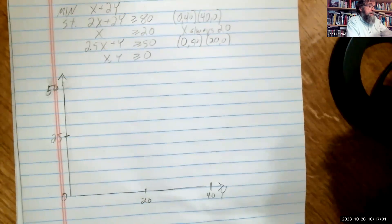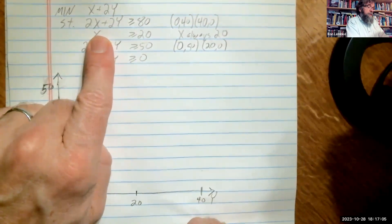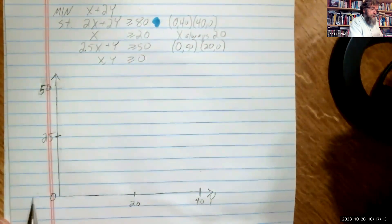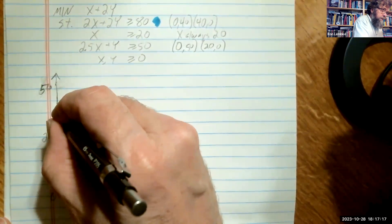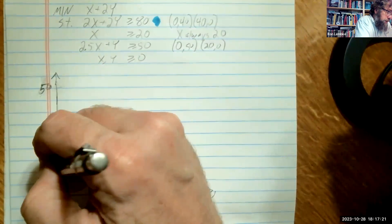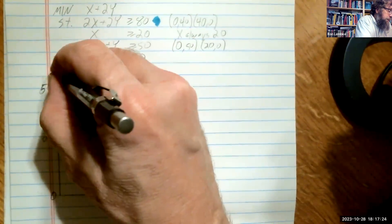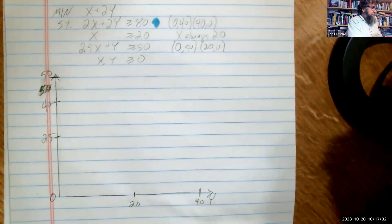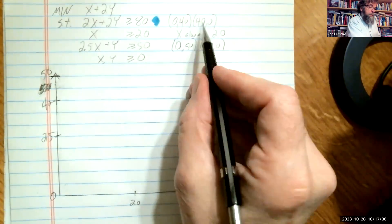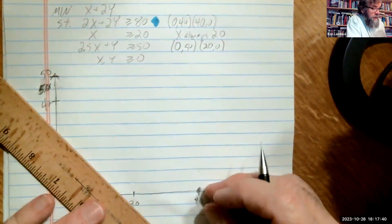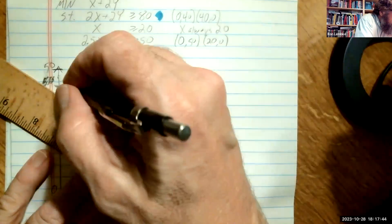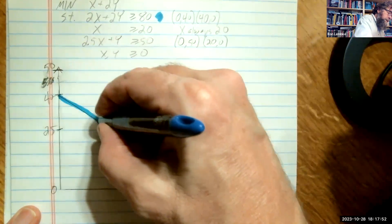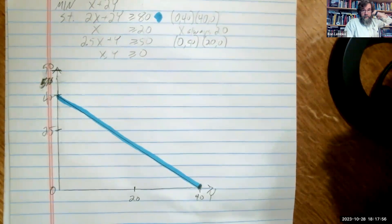Okay, let's see here. Our first constraint, 2x plus 2y greater than equal to 80. Let's make that blue. We go from 0, 40 and then 40, 0, so we're down over there. And have a line like that. And then I'm going to highlight that blue. And there's our first constraint.